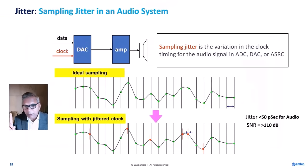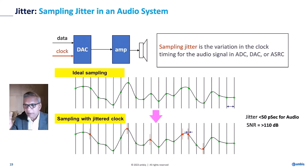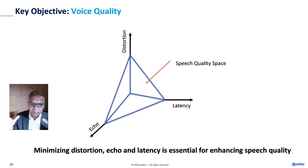Clock jitter is directly proportional to distortion on the DAC or ADC — sampling jitter. For telco, this must be under 50 picoseconds to achieve SNR over 110 dB at 16 kHz 16-bit width. If using 48 kHz sampling rate, the jitter requirement is even tighter, around 30 picoseconds. The key objective on any telco device is to reduce echo, latency, and distortion to enhance quality.